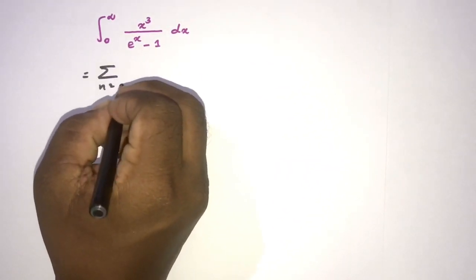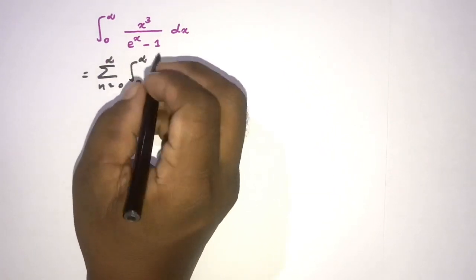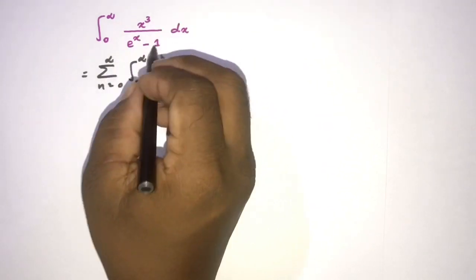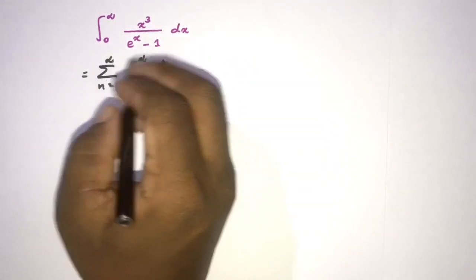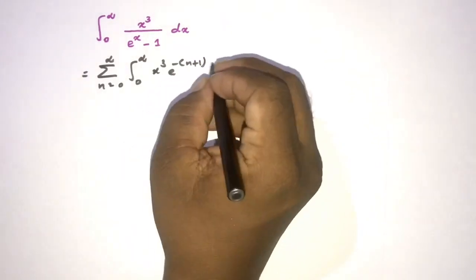n is equal 0 to infinity, here integral from 0 to infinity, here x to the third power. Now 1 over e to the x minus 1, we know, 0 to infinity e to the minus n plus 1 x here dx.